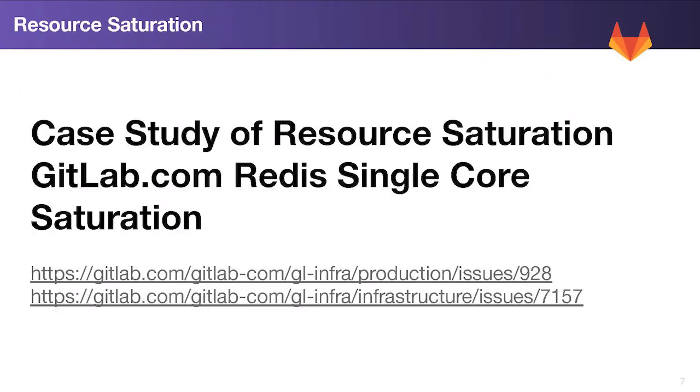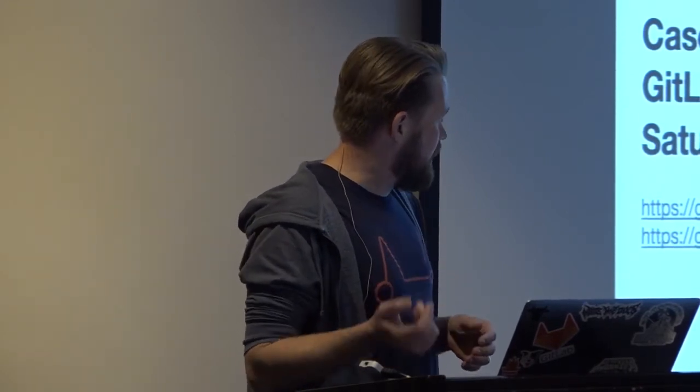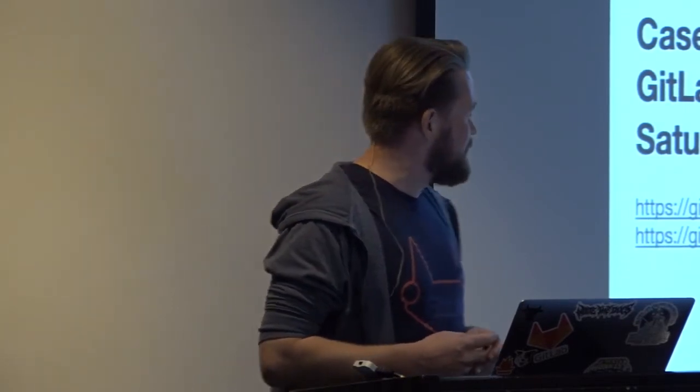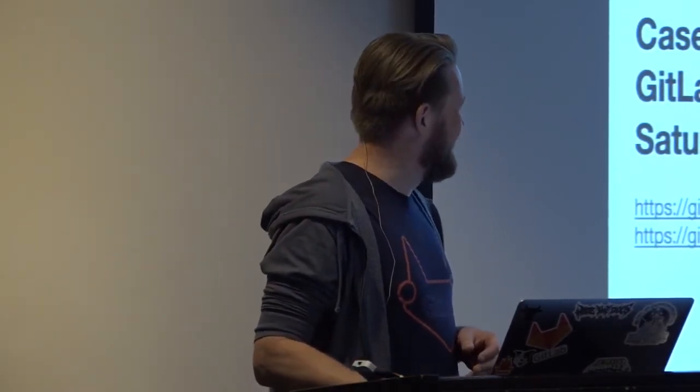From that example, I'm going to move on to an example of resource saturation that we saw on GitLab.com. This incident happened in July this year — we've got the production issue from when it occurred and then we had an RCA, which is basically a post-mortem. Those issues are public, like most things on GitLab.com.